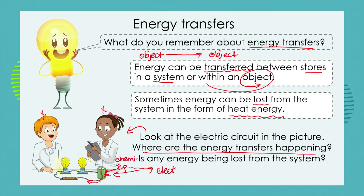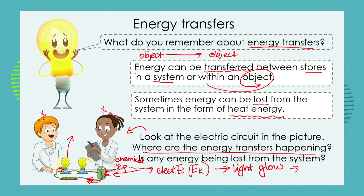Let's write 'chemical' up here so we can follow these transfers. Electrical energy — remember that electrical energy is due to particles moving along the wire, so electrical energy is a form of kinetic energy. What's going to happen is that energy is transferred to the light bulb, which is going to glow and shine. We see the energy in the form of light. The energy transfer can be shown as: chemical energy → electrical kinetic energy → light energy.